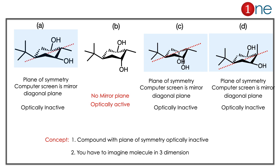If you look at structure C, you might realize it also has a plane of symmetry, because the hydroxy groups are symmetrical, the methyl is symmetrical, and the tertiary butyl group is also symmetrical. The mirror is exactly the computer screen. So structure C is definitely optically inactive. If you look at D also, things will be the same: the OH groups are in equatorial but they reflect nicely, and even the axial methyl reflects nicely — so there is a plane of symmetry inside. So only structure B does not have a plane of symmetry, making it optically active. The key concept: a compound with a plane of symmetry is optically inactive, and you have to imagine the molecule in three dimensions.